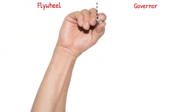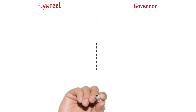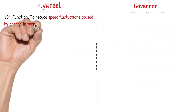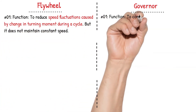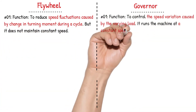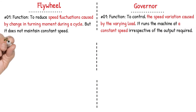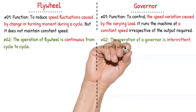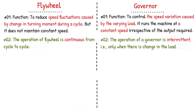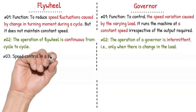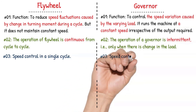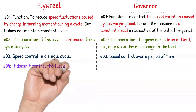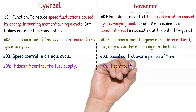Let us summarize the key differences between flywheel and governor. Flywheel is used to reduce speed fluctuations during a cycle, whereas governor maintains a constant speed of the machine system. The operation of the flywheel is continuous from cycle to cycle, whereas the governor works intermittently. Speed control happens within a single cycle in the case of flywheel, whereas for a governor it happens over a period of time.